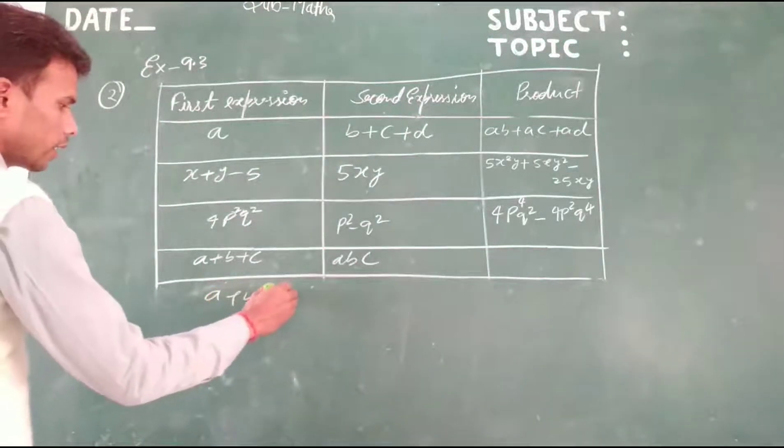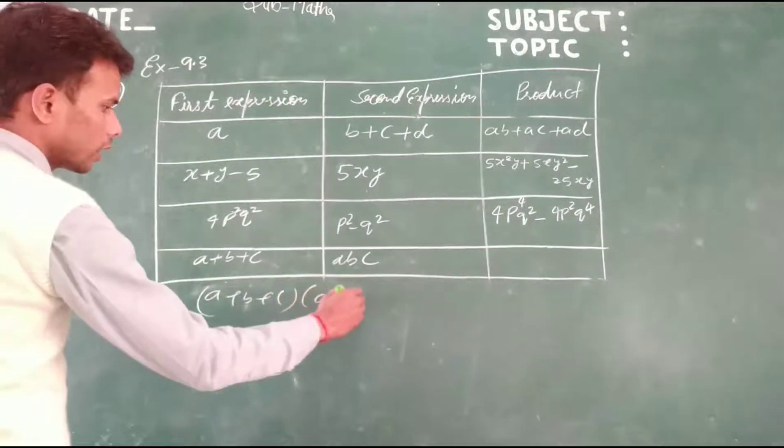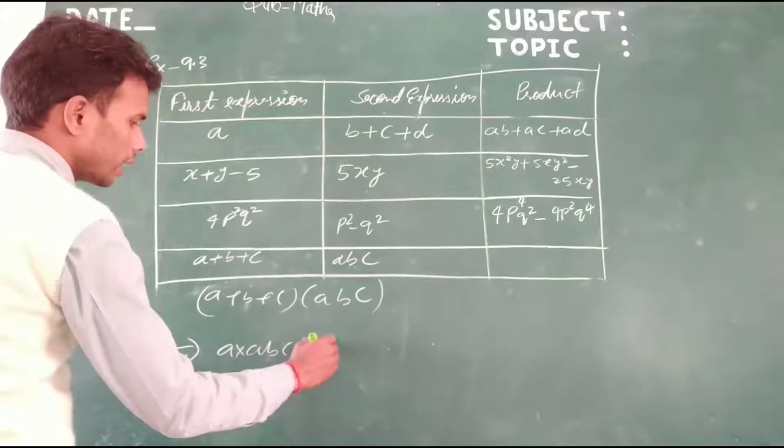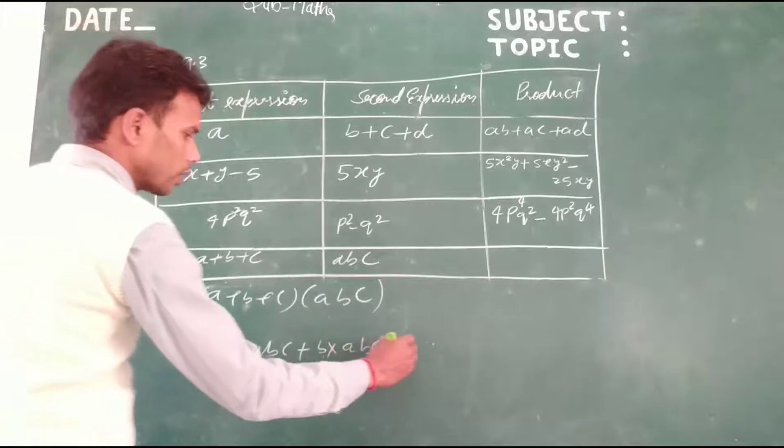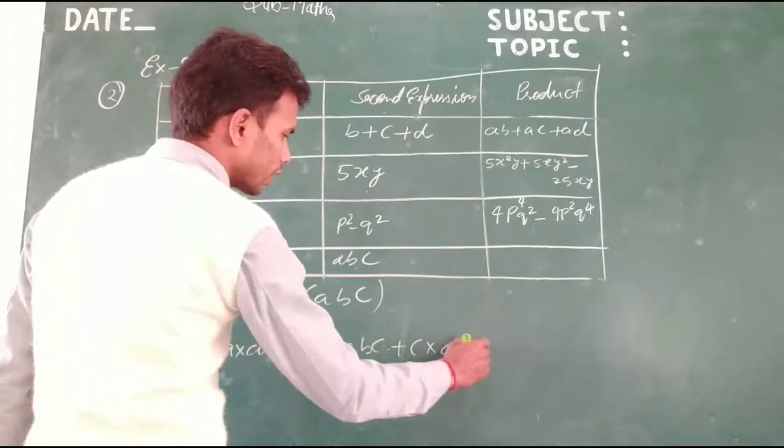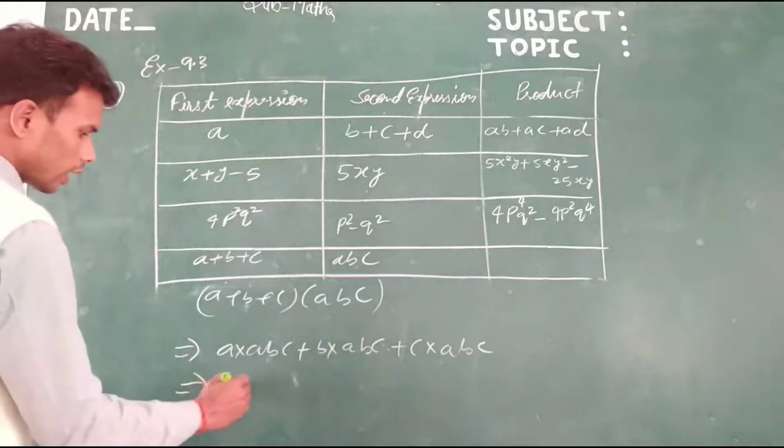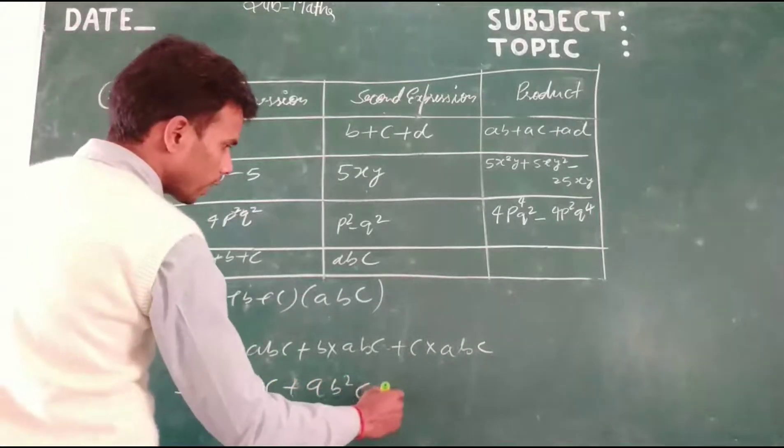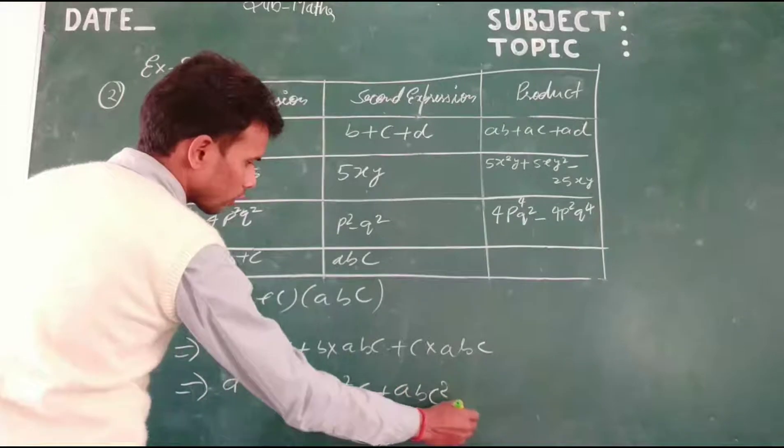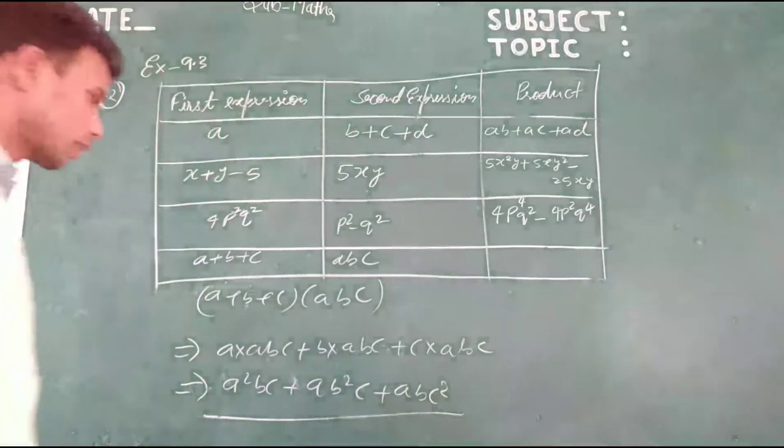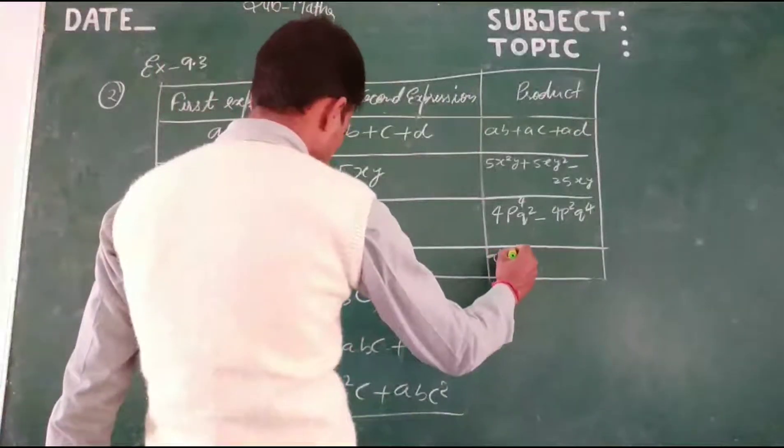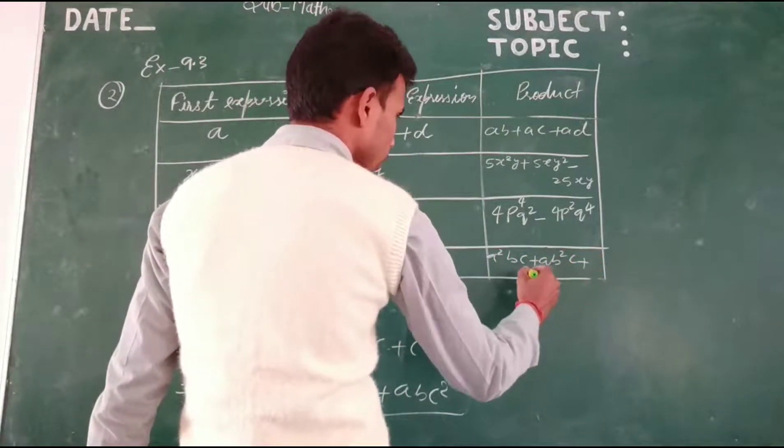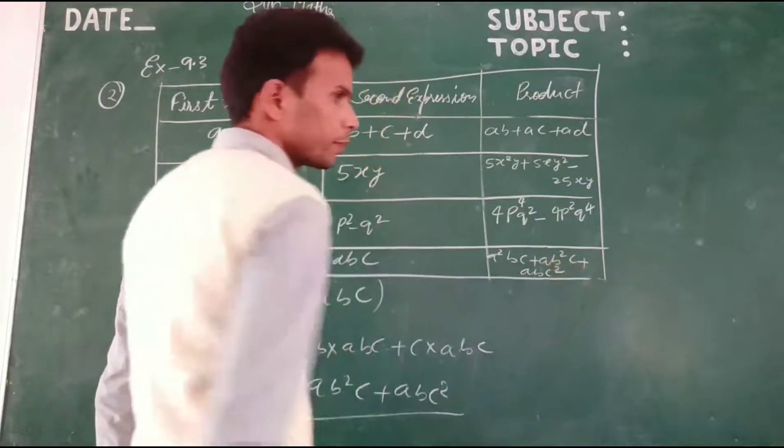Now we solve the last part: A plus B plus C, bracket close, ABC. We multiply A to ABC, B to ABC, and C to ABC. So A squared BC plus AB squared C plus ABC squared. This is the product.